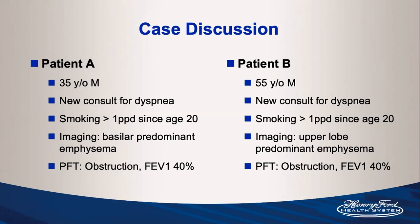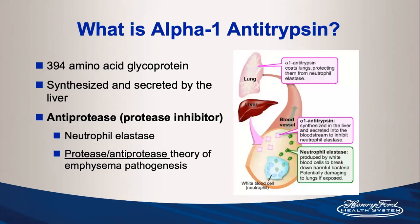Alpha-1 antitrypsin is a 394 amino acid glycoprotein synthesized and secreted by the liver. It is an anti-protease whose main job is to protect the lungs from neutrophil elastase, going back to the protease anti-protease theory of emphysema pathogenesis. In normal patients there's a significant excess of alpha-1 antitrypsin that protects the lungs, but in disease this balance is skewed, allowing proteases to damage the lungs and cause emphysema.